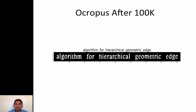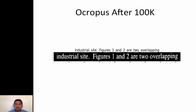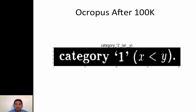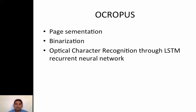Here's another example, and we can see that the recognition rates are very high — it can recognize numbers as well as symbols. OCR Opus also does page segmentation and binarization. At the heart of the tool there is a recurrent neural network, or LSTM, that is being trained.